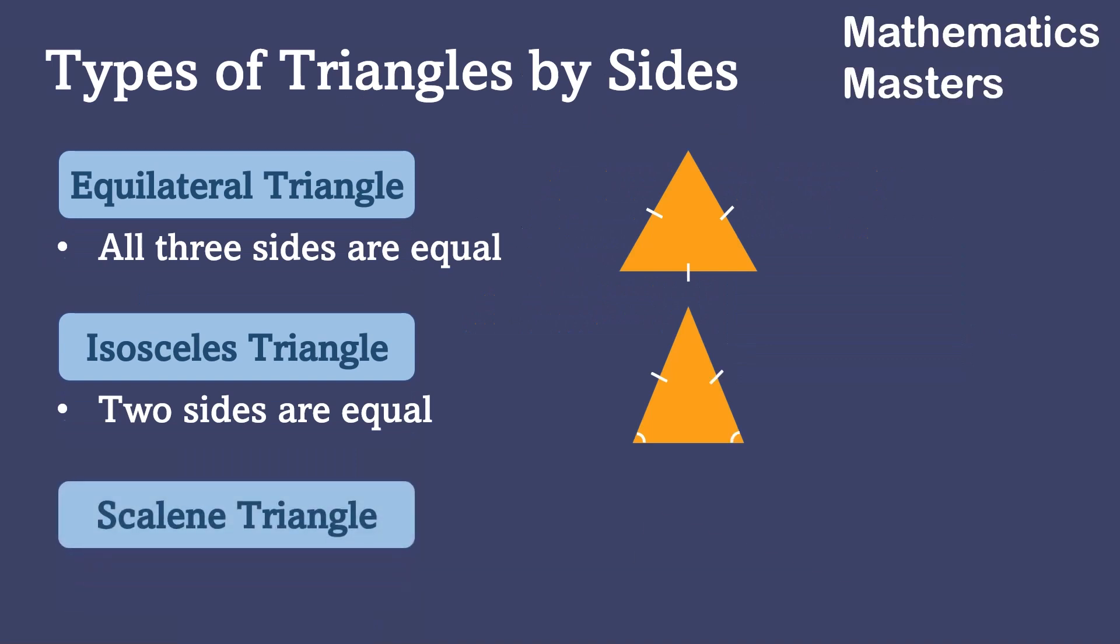And the third one is the scalene triangle. The scalene triangle is a triangle in which there are no sides which are equal to any other sides.